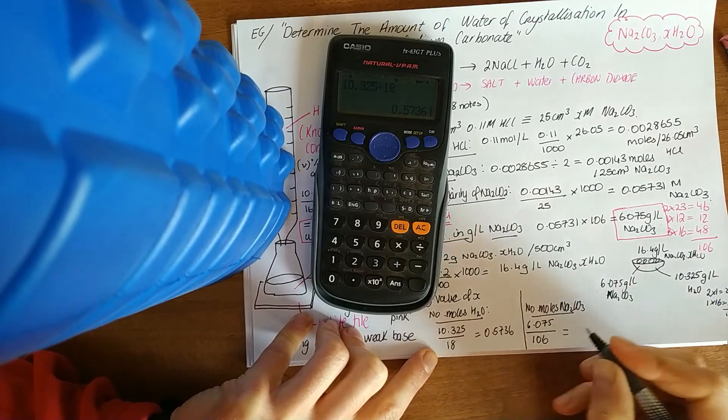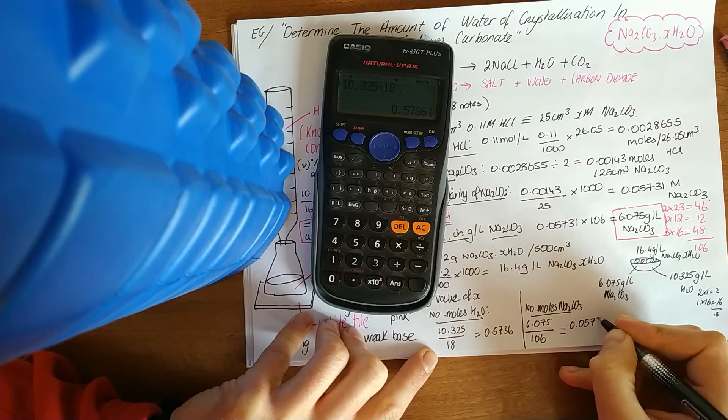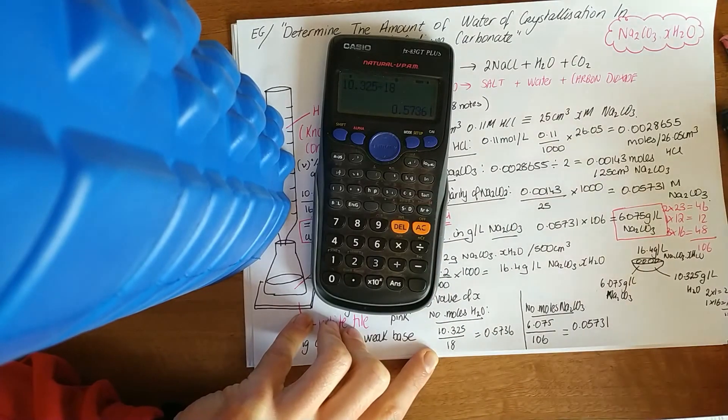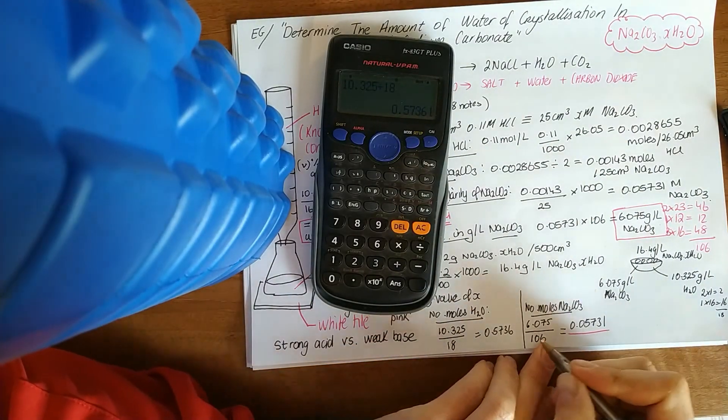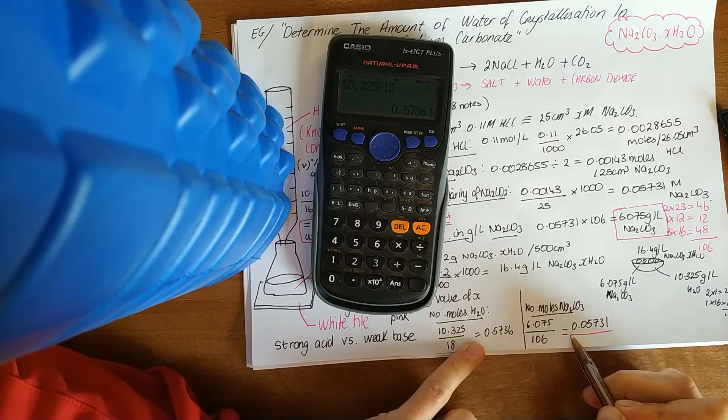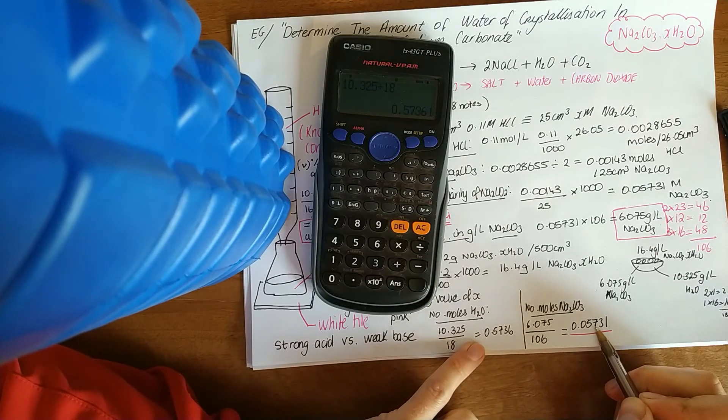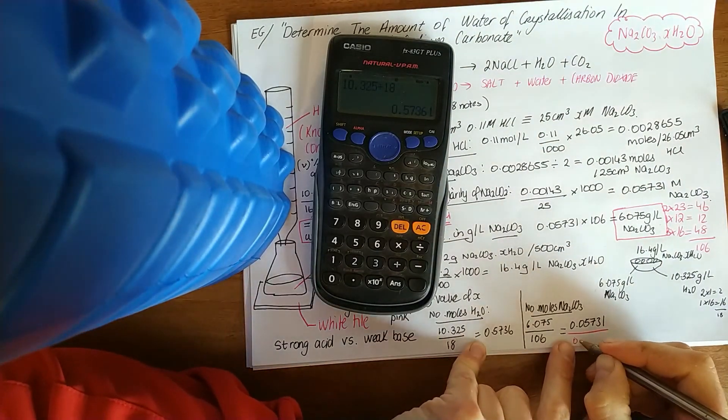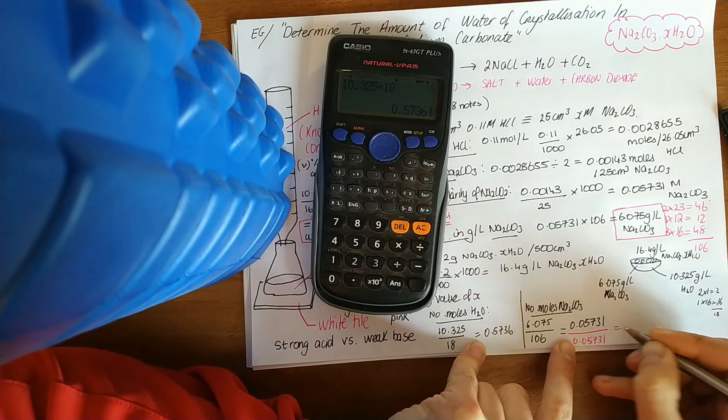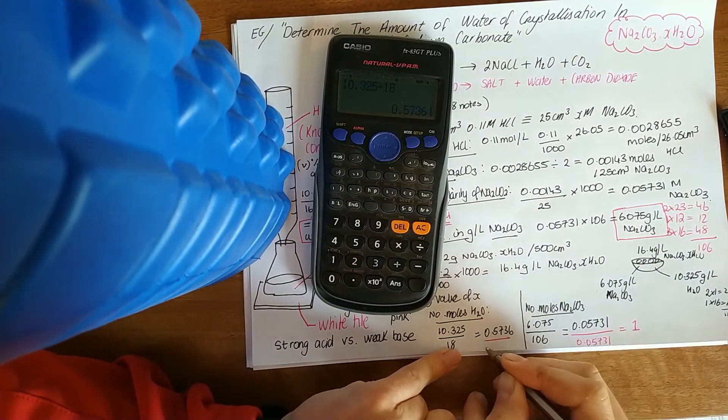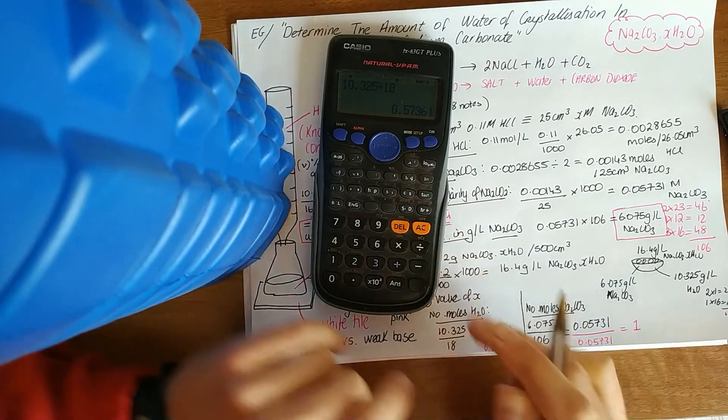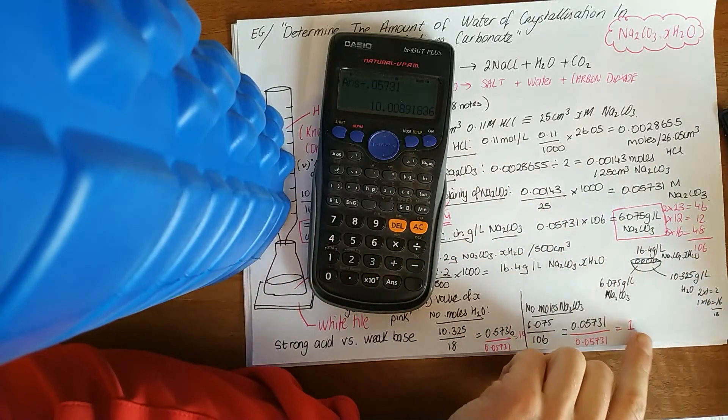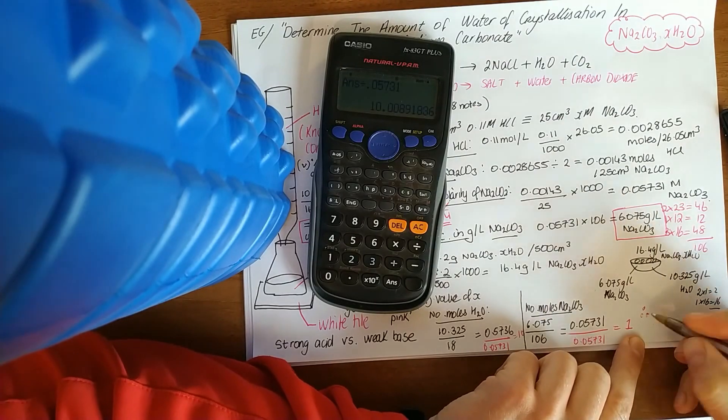Divide that by 106, and when you throw that in your calculator, you get 0.05731. I knew that because it's up here, but throw it in your calculator and then divide by the smallest. Smallest whole number ratio. You're not going to write Na2CO3 0.05731 0.5736 H2O. So just divide by the smallest, that's why that's 1, and 10 which looks nice. So your value of X is 10.